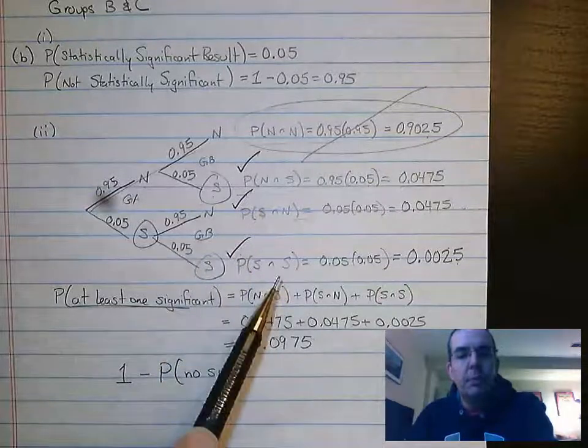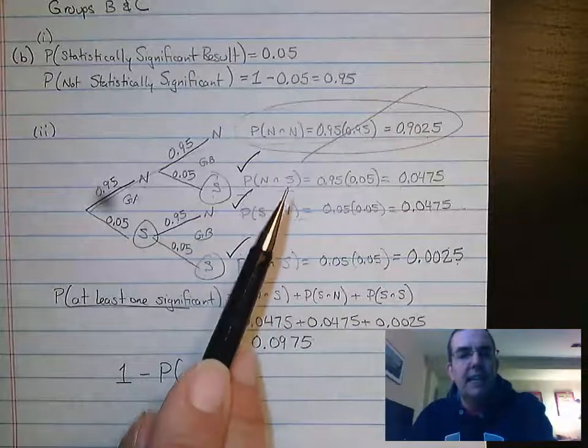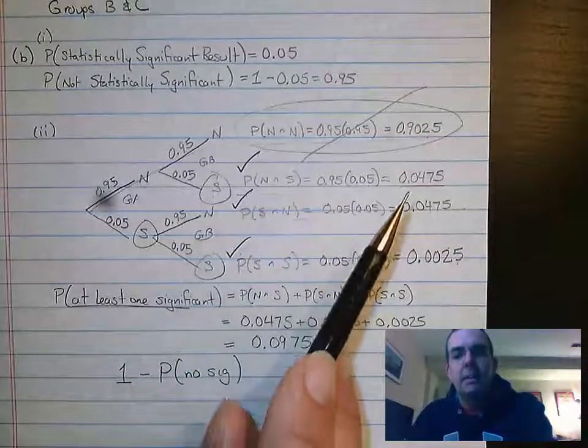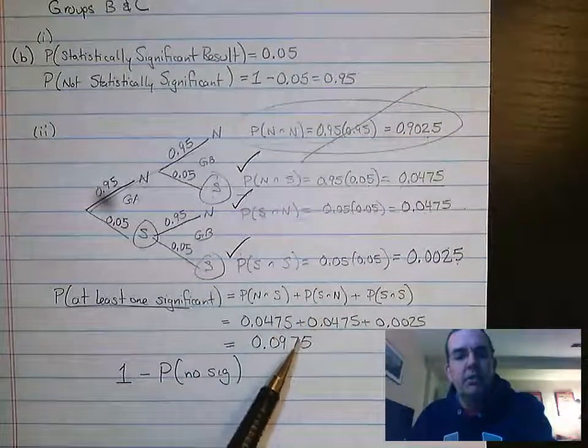the third one, and the fourth one, what is the probability of these three things happening? These are all mutually exclusive events because they can't happen at the same time. So that means I can add all of these probabilities together, get 0.0975.